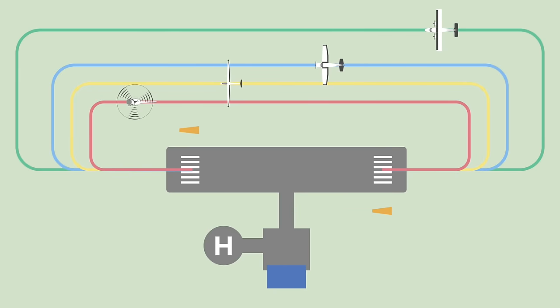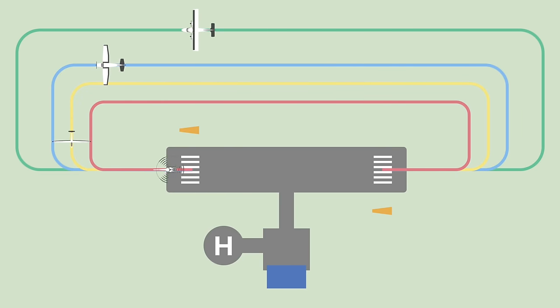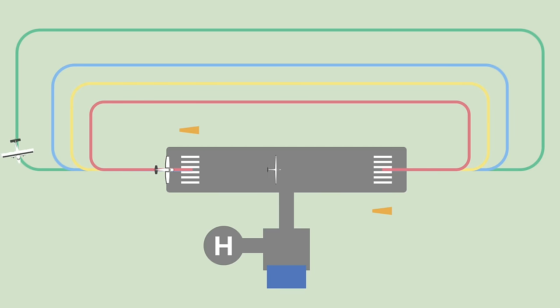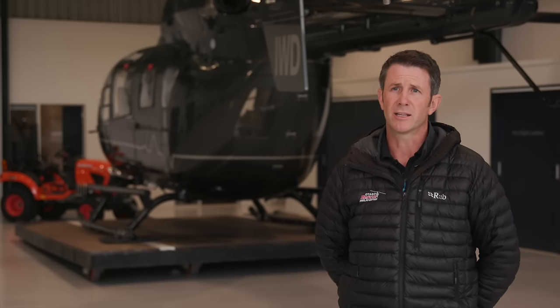Now we understand the basic circuit pattern, we need to understand that there may be differences between users based on type. Aaron, Steve and Bevan will tell us about the differences with helicopter, gliding and warbird circuits. When operating in a circuit anywhere, you need to have a good understanding of the different aircraft operating — they all have different speeds, different climb angles, different approach angles and different approach speeds, which will affect how the circuit is flown.